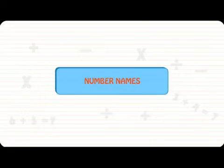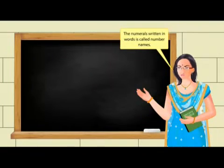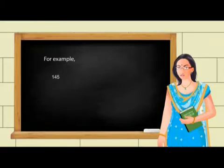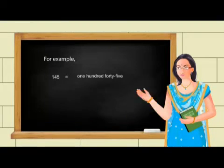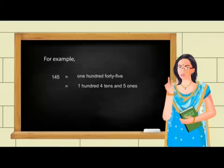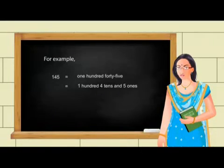Number names. The numerals written in words is called number names. For example, 145 is read as one hundred forty-five. It represents one hundred, four tens, and five ones.